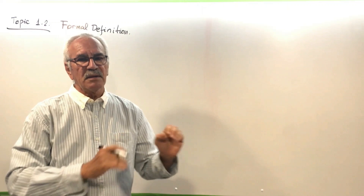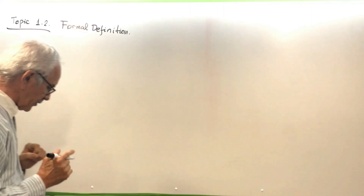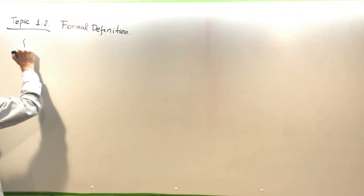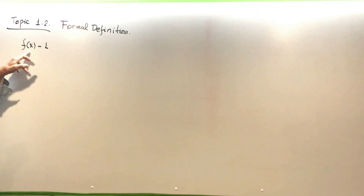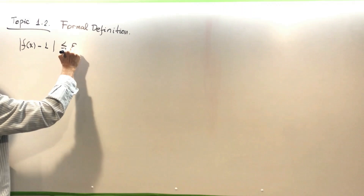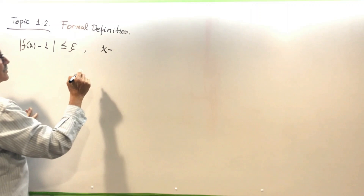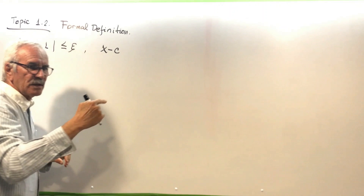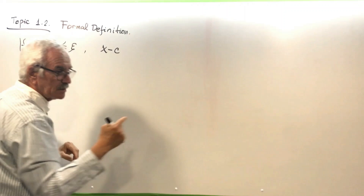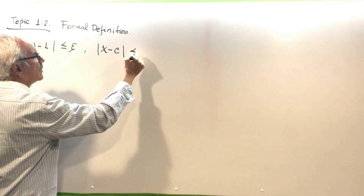The formal definition of the limit says that the value of the function minus the value of the limit at some x will be less than or equal to epsilon, while x minus the value which we are approaching — the variable of the function — will be less than or equal to delta.